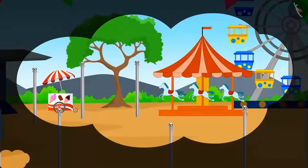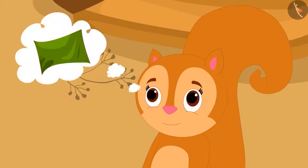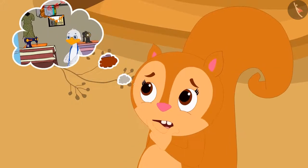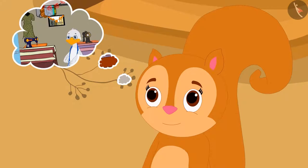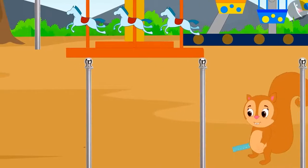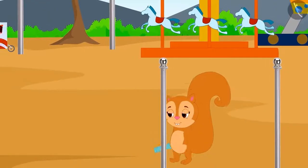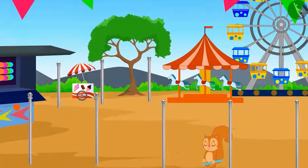Curtains are going to be hung at various places at the fair in Chambapur. Chanda has got the task of making those curtains. She thought she would buy material from uncle's shop. Chanda had learned from Appu about the use of centimeters and rulers, so she is confident she will easily be able to give the correct measurements for the curtains to uncle.